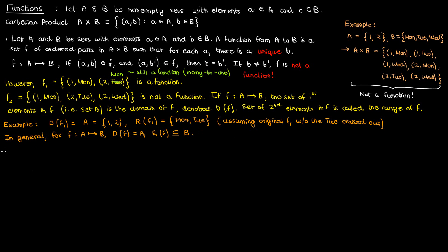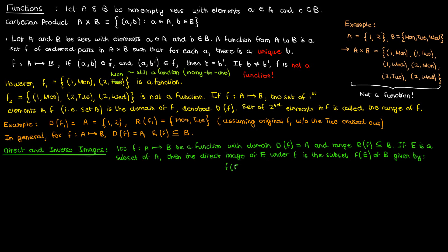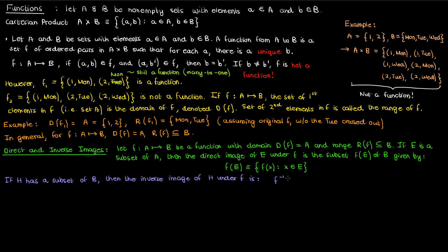In the rest of the video, I'm going to talk about different types of functions, beginning with direct and inverse images. Suppose I have a function f from the set a to the set b, whose domain is D(f), which is just a, and whose range is a subset of b. If I had a subset of a called e, the direct image of e under the function f is just f(e). Additionally, if h is a subset of b, then the inverse image of h under f is the subset f⁻¹(h) of a, consisting of all values of x in the domain such that f(x) is contained in the set h.